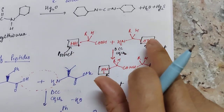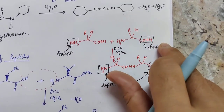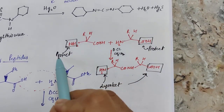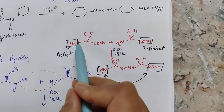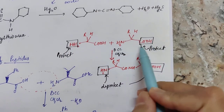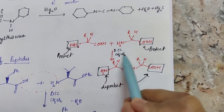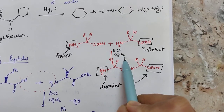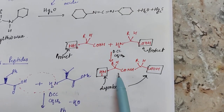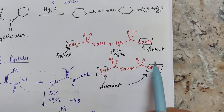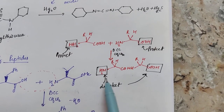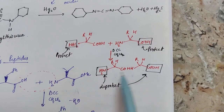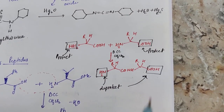To summarize the general steps: protect the amine group of the first amino acid and the carboxylic group of the second amino acid, then react with DCC in dichloromethane. After peptide bond formation, deprotect both groups. These are the general steps in peptide synthesis.